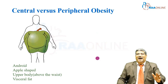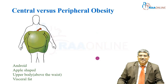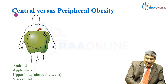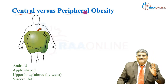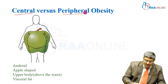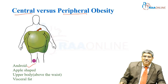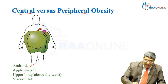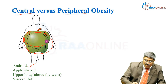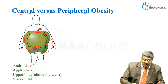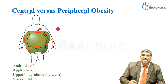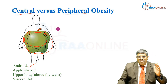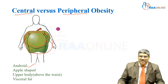Coming to another classification: central and peripheral obesity. Central obesity is also called Android obesity. It is apple-shaped and is called upper body obesity — above the waist. The obesity is mostly above the waist, and it is called visceral fat obesity.